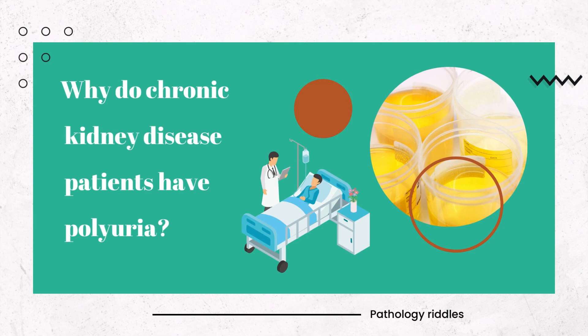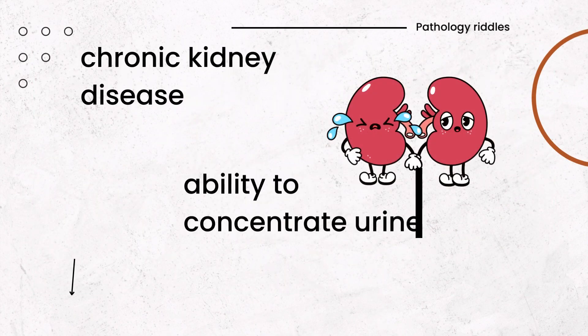Why do chronic kidney disease patients have polyuria? In chronic kidney disease, there is a decrease in the ability to concentrate urine, hence it causes polyuria.